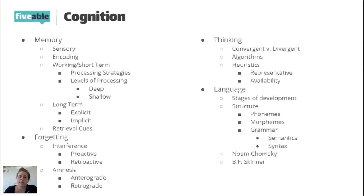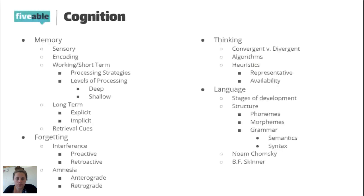Someone's asking about the most important scientists and psychologists. I'll highlight the key ones as we go through each unit — like Chomsky and Skinner for language. Are there any other questions about cognition? Otherwise, I'm sliding into the next topic.